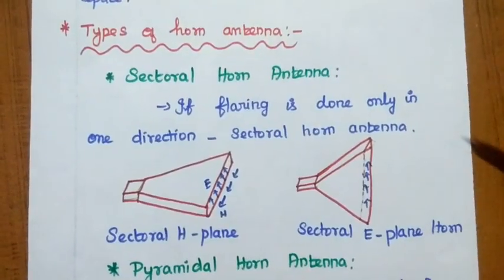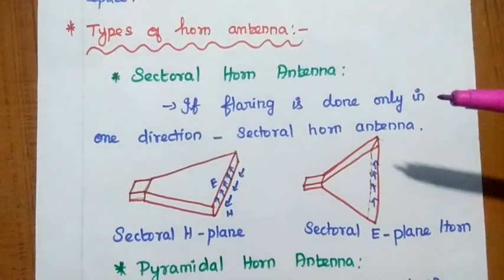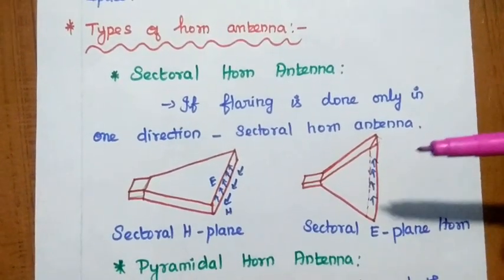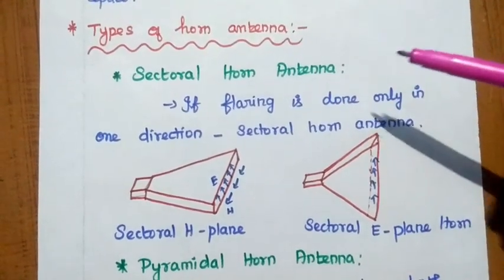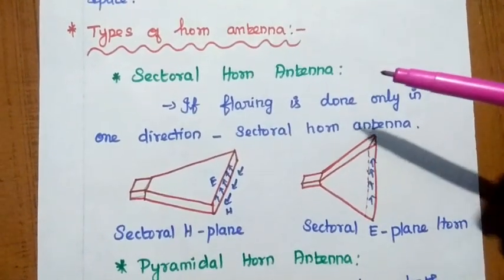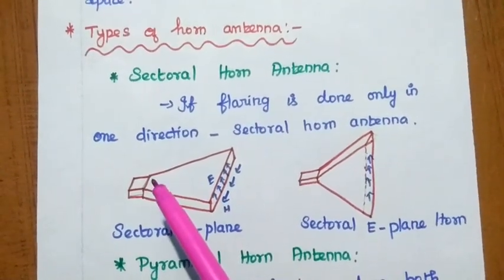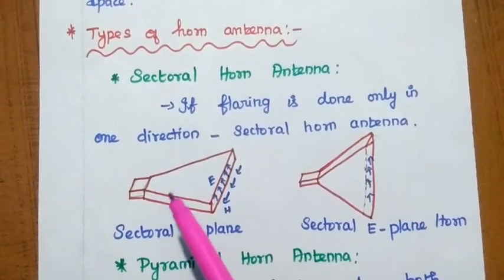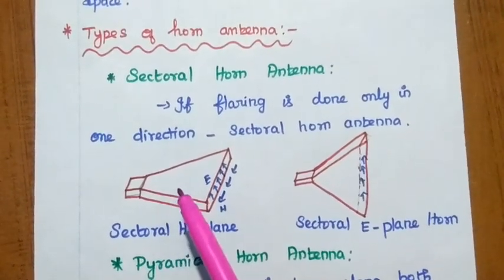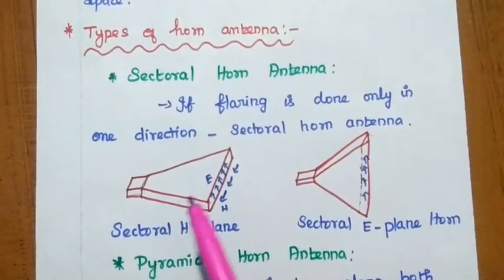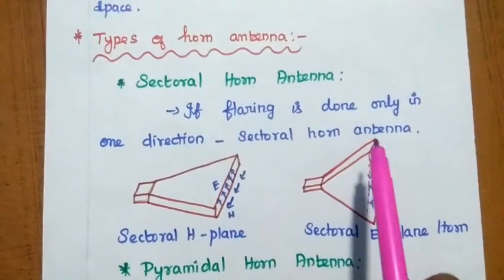Next, the types of horn antenna. There are different types of horn antenna based on its flaring. The first one is the sectoral horn antenna — flaring means that wide opening. If the flaring is done only in one direction, that is called the sectoral horn antenna.